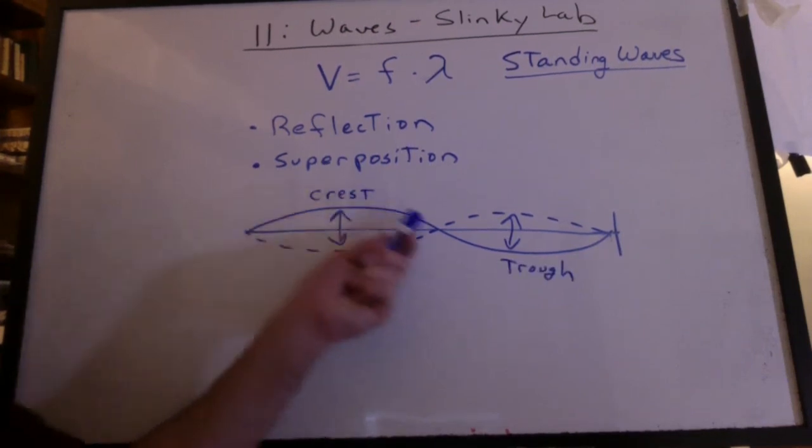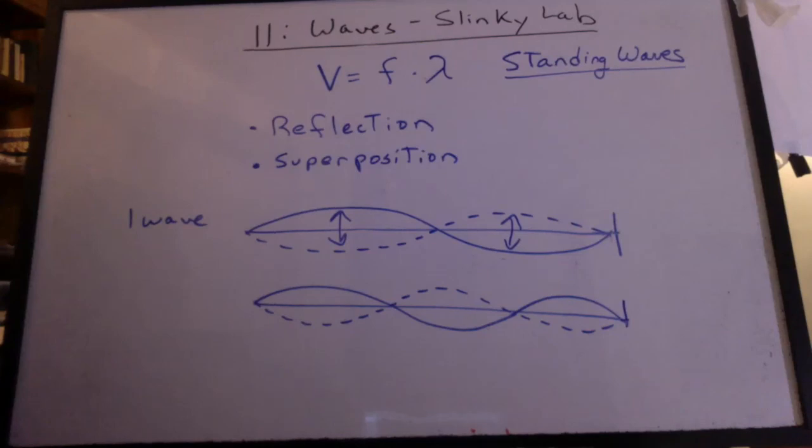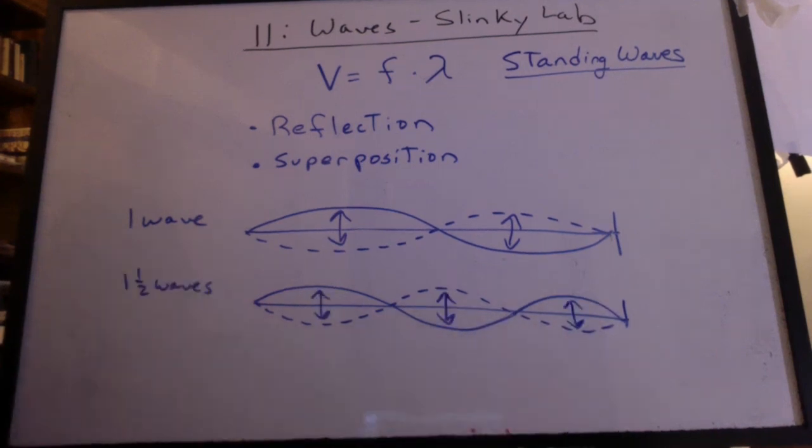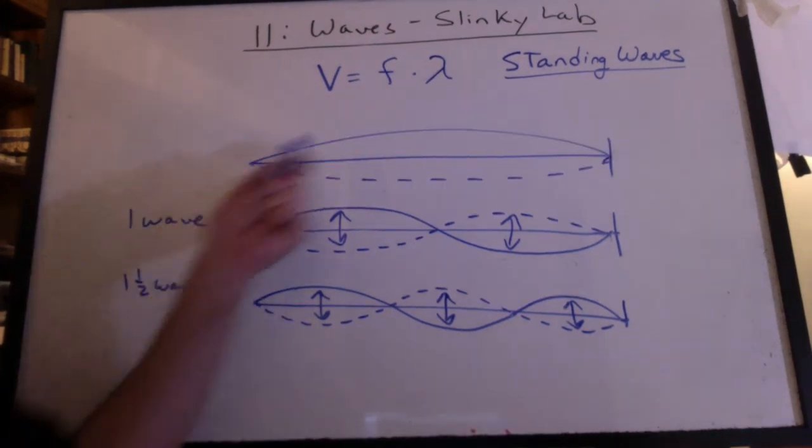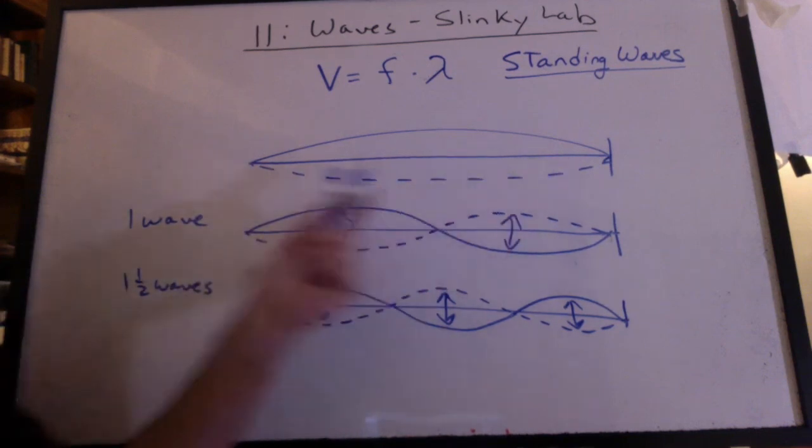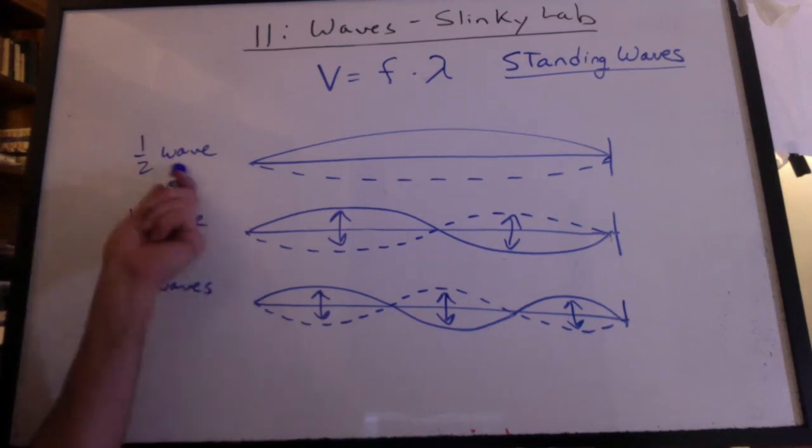We have a crest and a trough. So this is one full cycle. That's one wave. If I shake my hand a little faster, I can generate one and a half waves. Each half wave looks like it's just moving up and down. And if I go slower, I can have a crest and then later a trough. But I don't have a crest and a trough together at the same time. So that's half a wave.